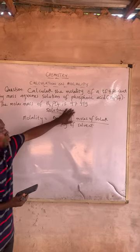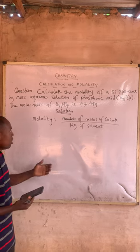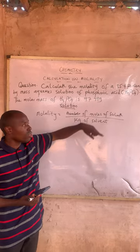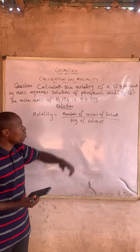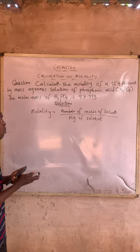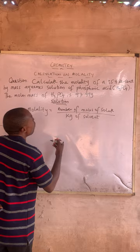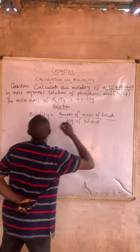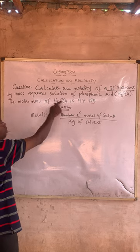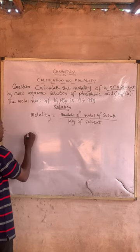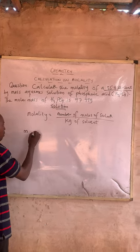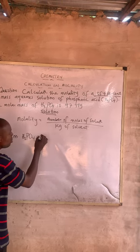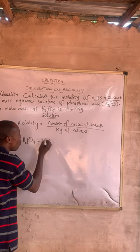This is the molar mass of the phosphoric acid. The formula for molality is equal to the number of moles of solute over the kilogram of water (solvent). For a question like this, the statement '35.4% by mass of phosphoric acid' simply means that the mass of the phosphoric acid is 35.4 grams.